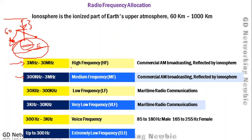This ionosphere reflection is very helpful. If I am somewhere in one country and want to send data to a specific point, I can direct the signal toward the ionosphere, and it will reflect back to my destination on earth. So the ionosphere is very useful in long-distance communication.